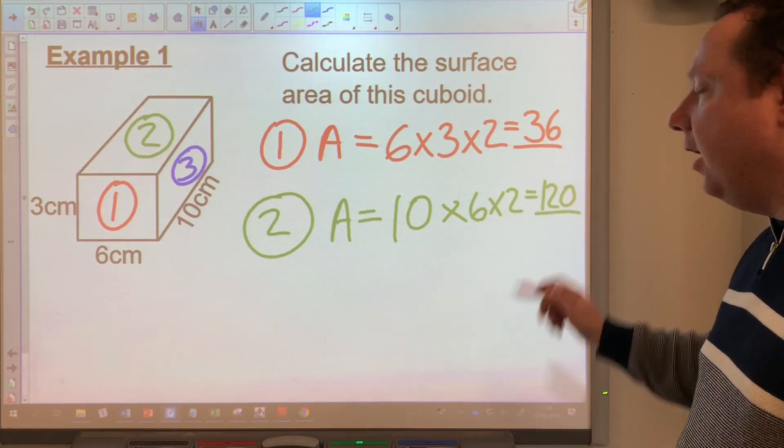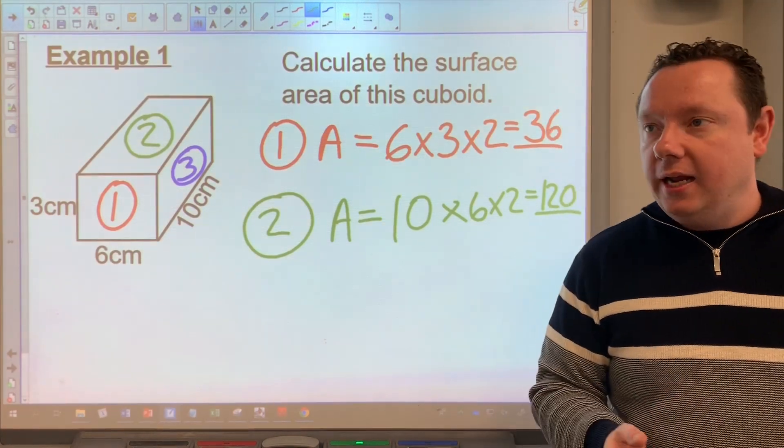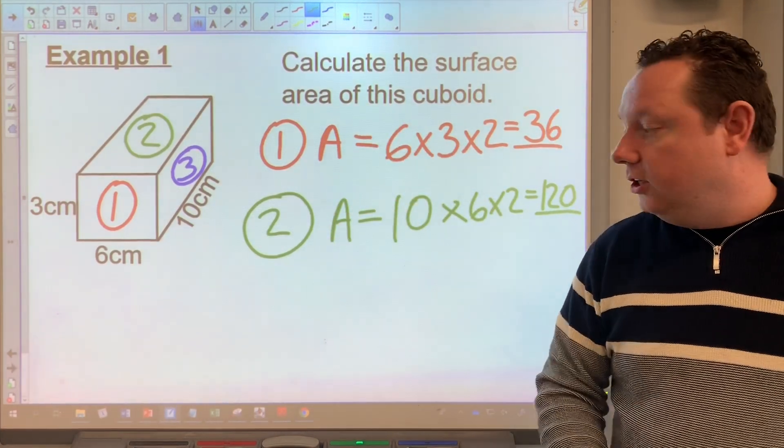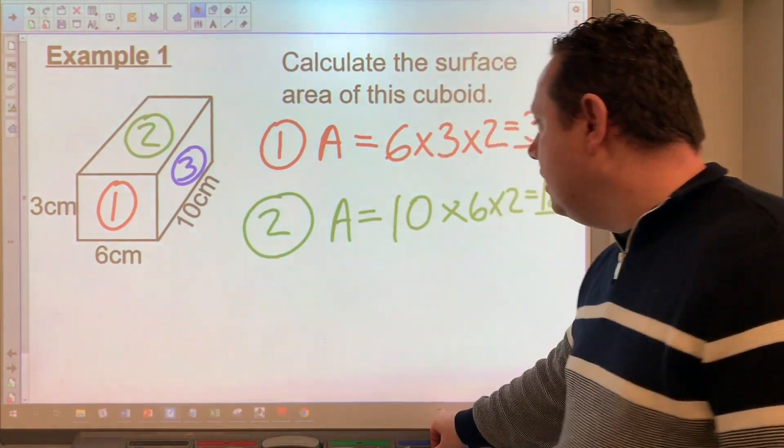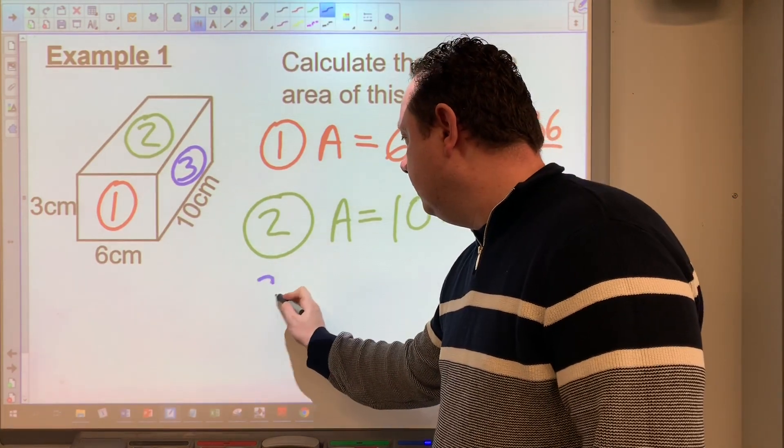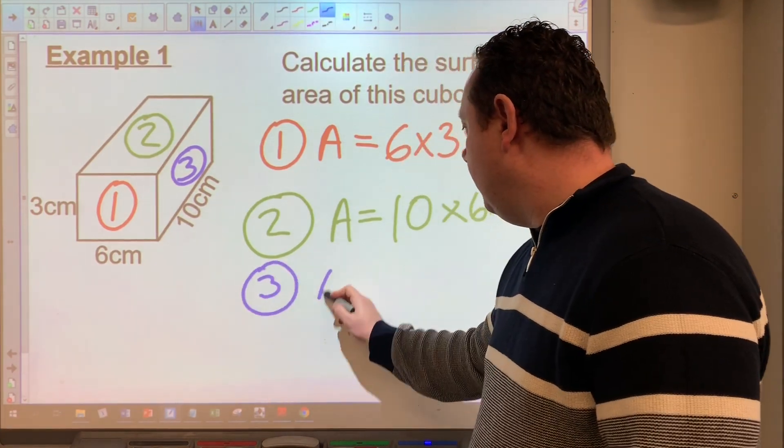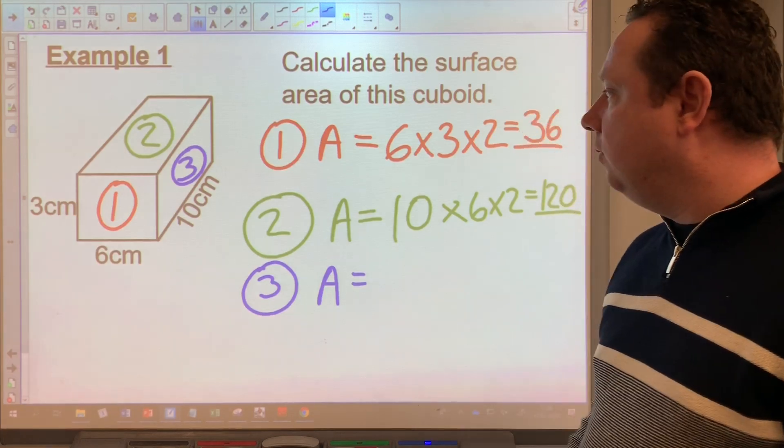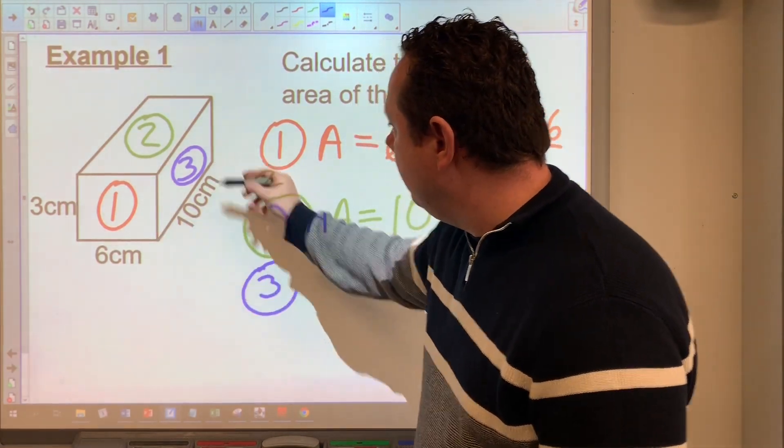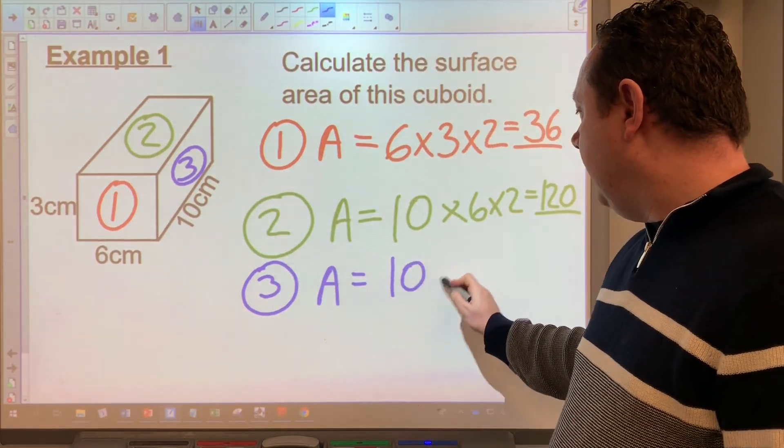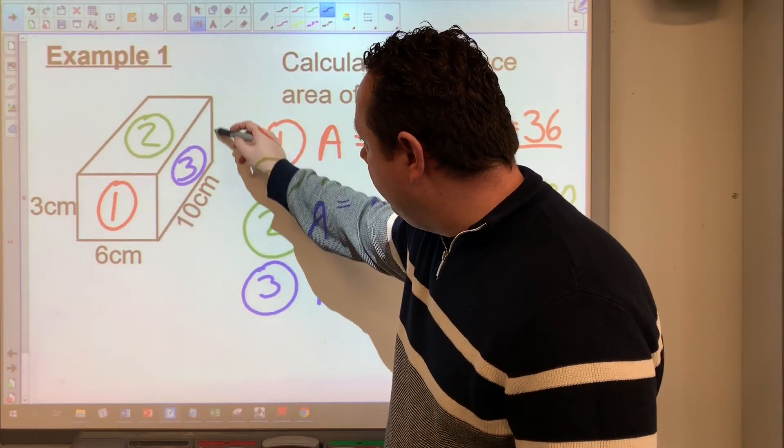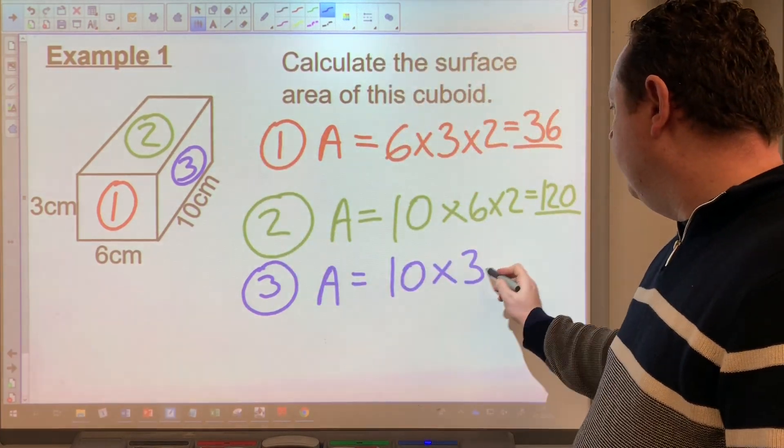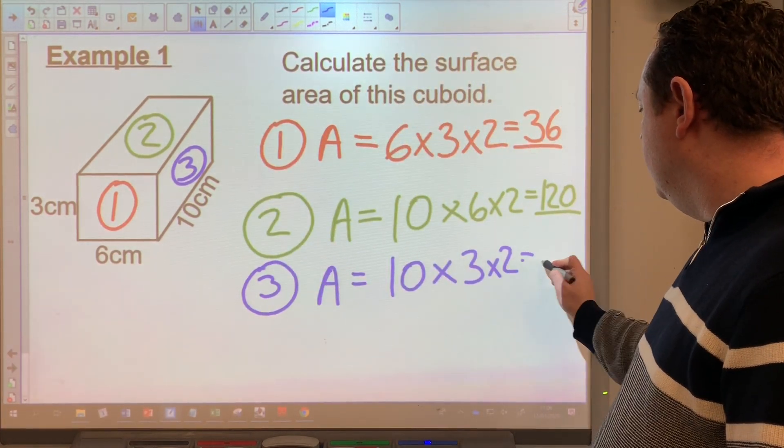Now you can take your time working that out, use a calculator, do it in your head, do a sum at the same, anything you can do to work out that. Let's move on to number three. Area equals, well, I've got 10 along the side times three up the side and I've got two of them. So that's 60.